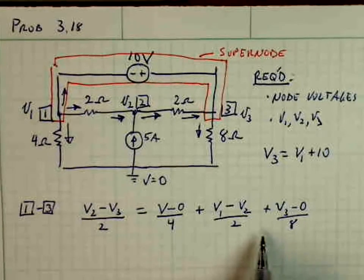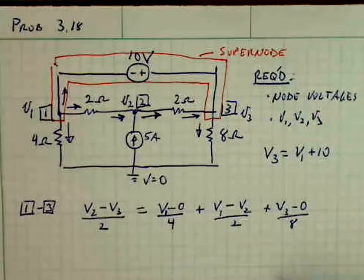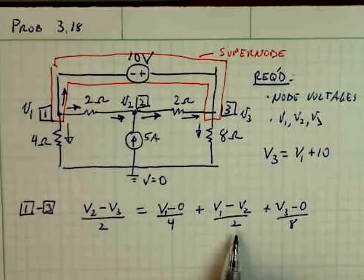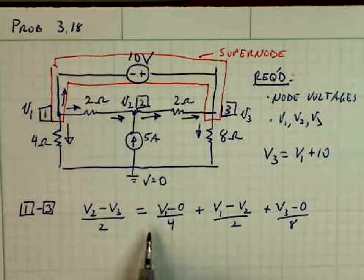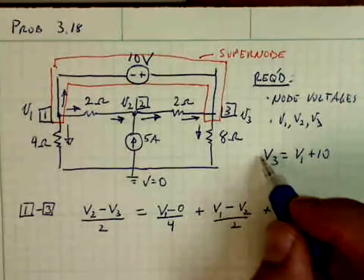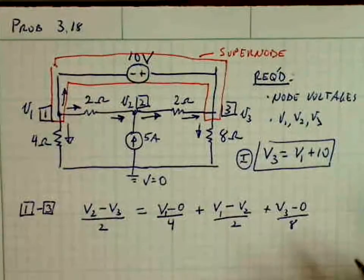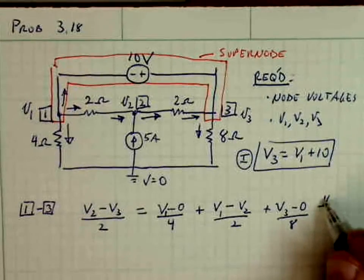And then we can convert this into an expression in terms of V1, V2, and V3, but we know that V3 is linked to V1 by this equation here. So there's our first equation, this is our second equation.